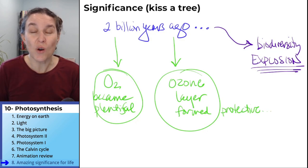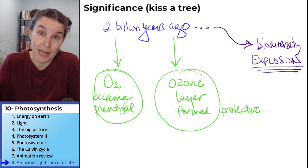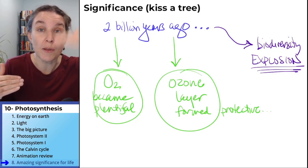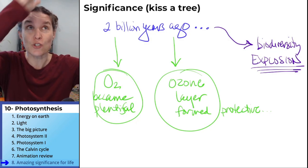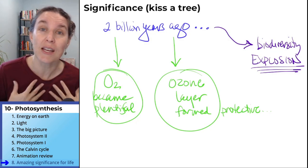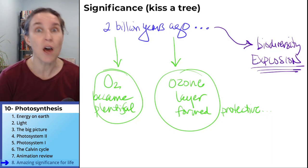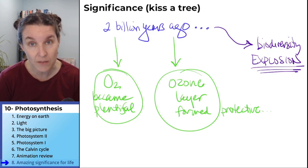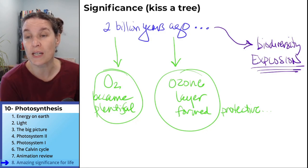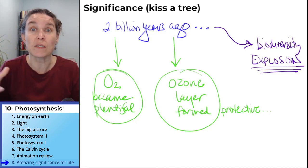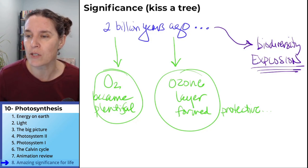So the ozone layer has protected critters from all that crazy light and electromagnetic radiation that's coming from the sun. Not all of it gets through because of the ozone layer. And that served as a protective field to allow this increase in biodiversity.